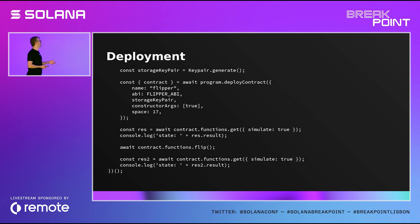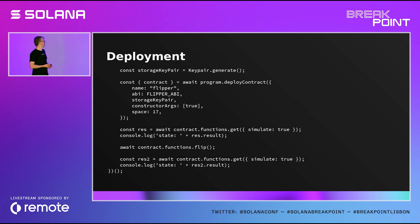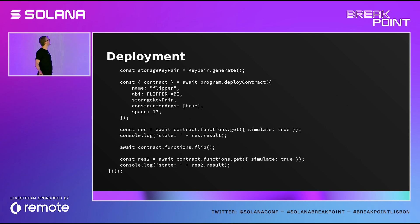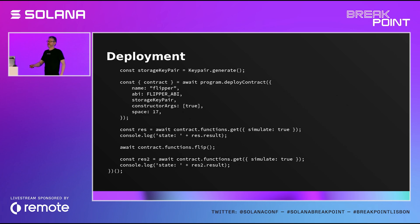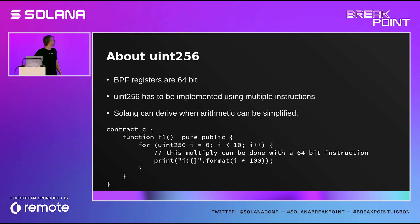You can also call the flip function on the flipper. When you call get again, the state has been flipped. The await contract.functions.flip will do an actual transaction. That is a very basic example.